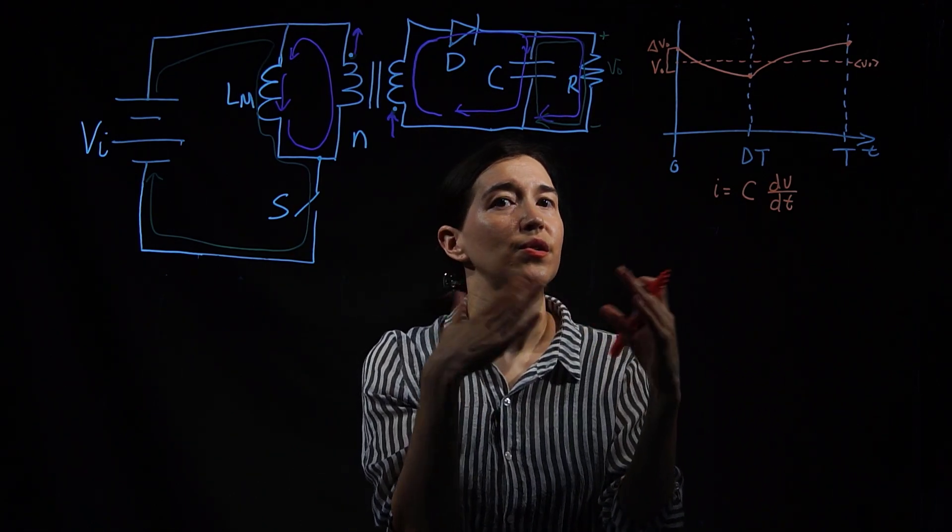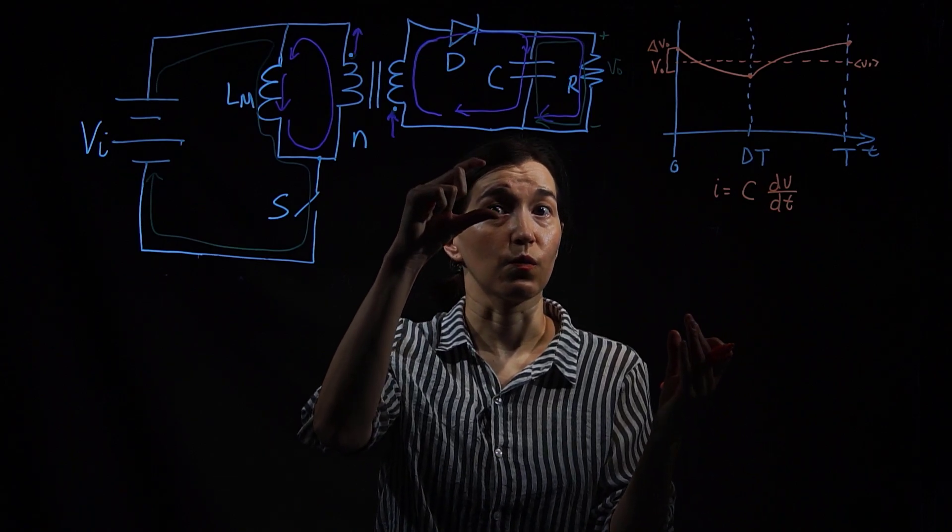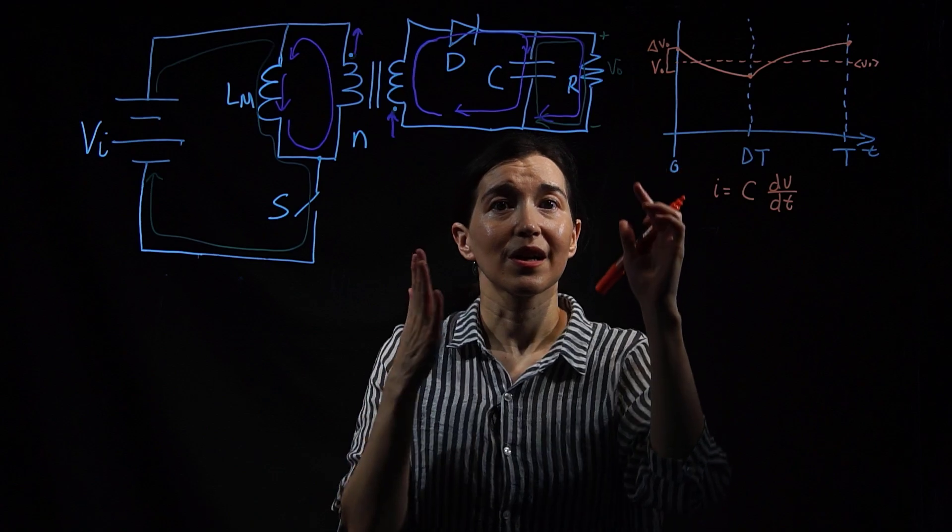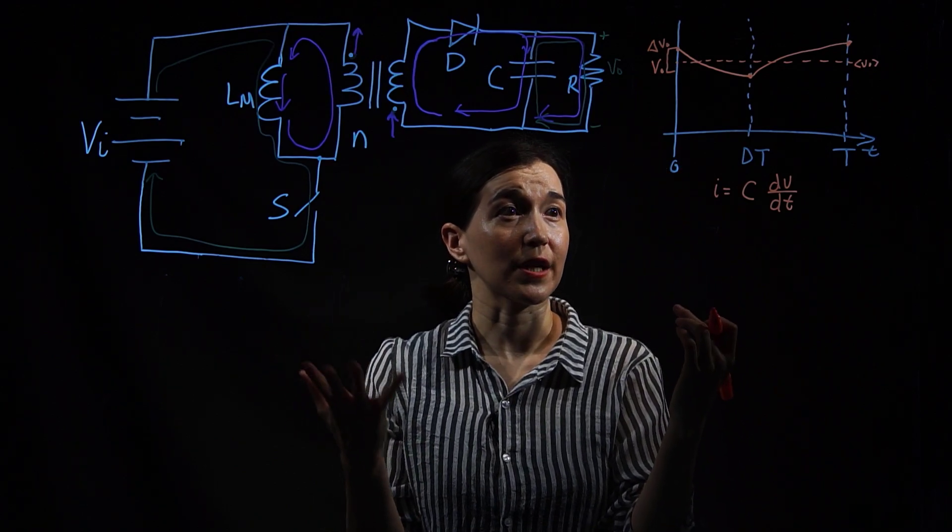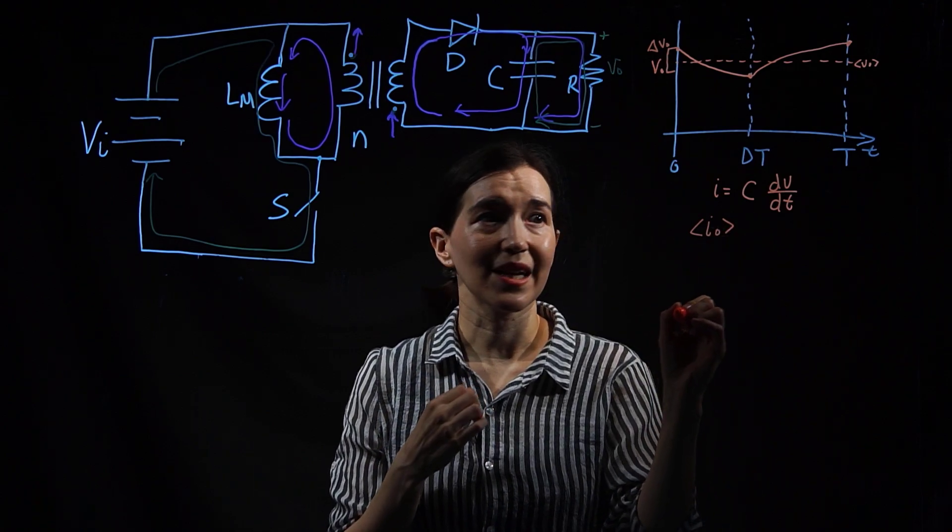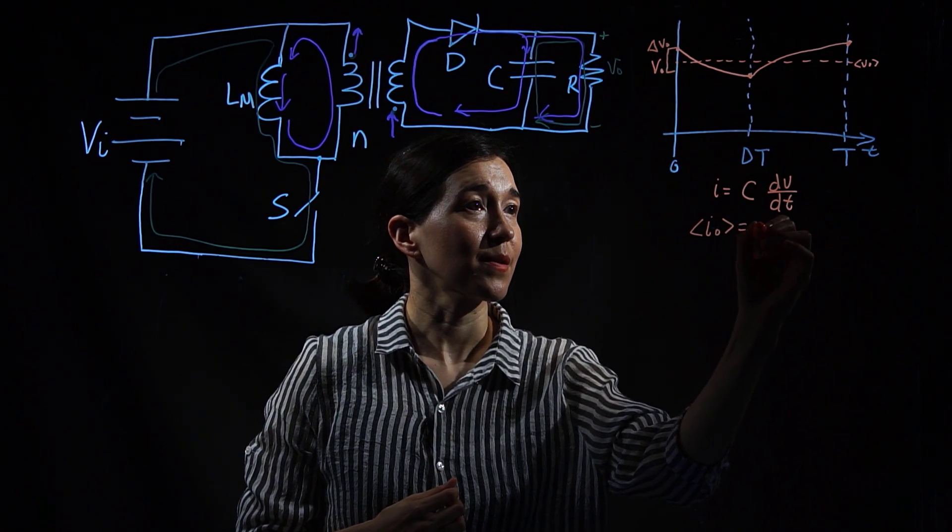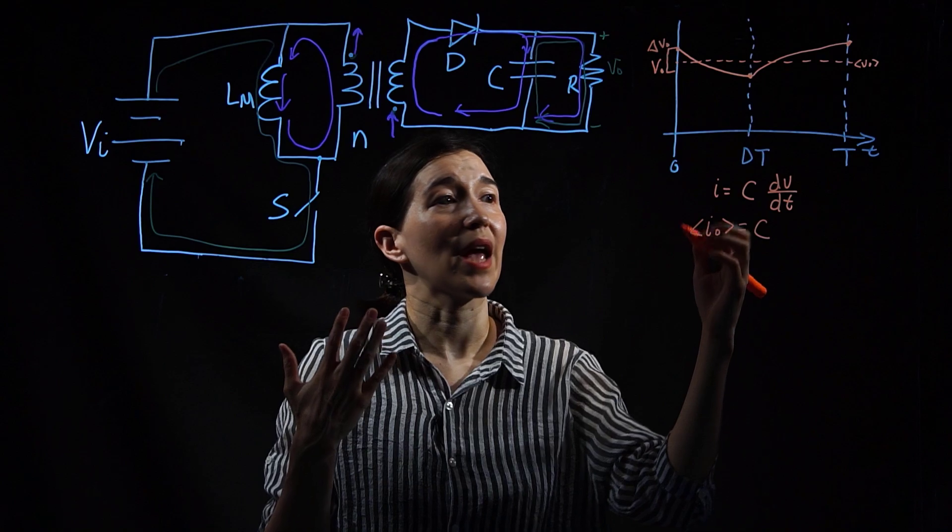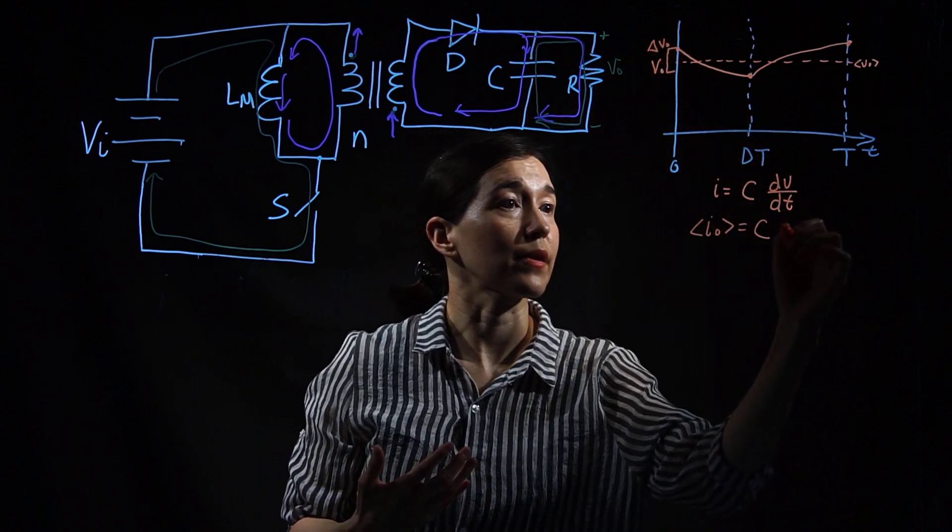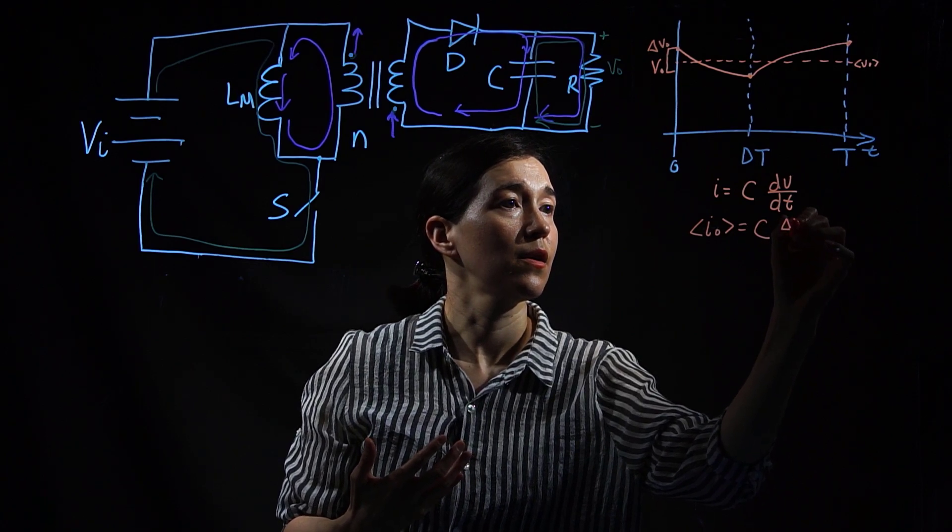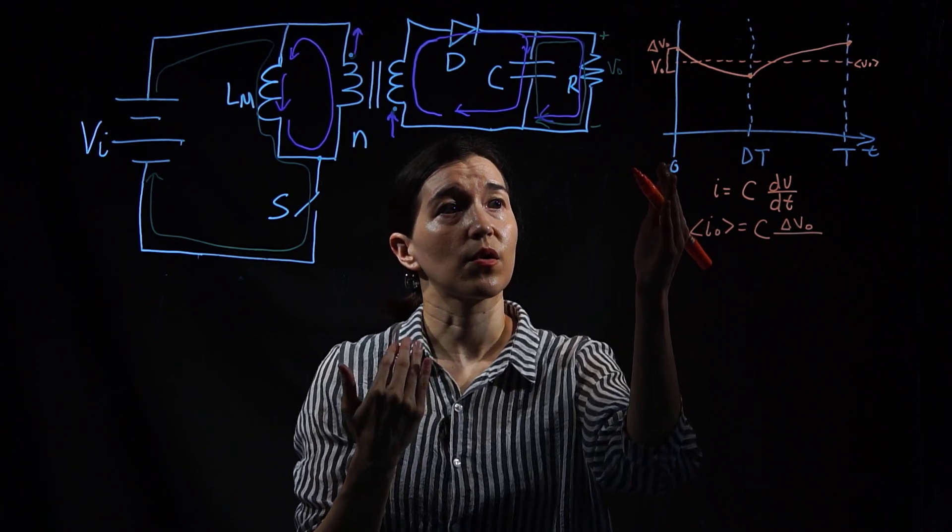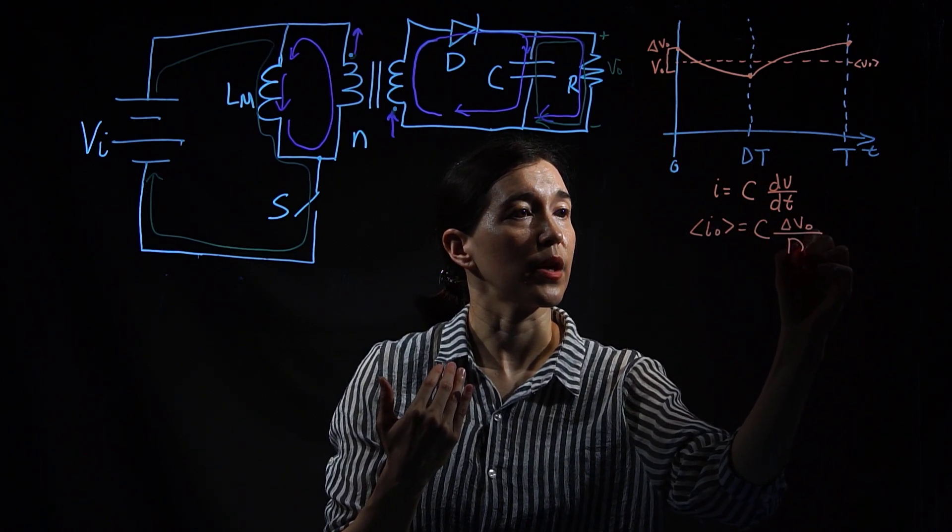We're going to choose that one to do the analysis to figure out this ripple. During that time, the current out of the capacitor is going to be the same as the average output, so IO. Then we have the capacitor, and we have dV. During this time we're trying to solve for delta V out. So that's going to become delta V out here, and dt. The time period is going from 0 to dt. So there we go.